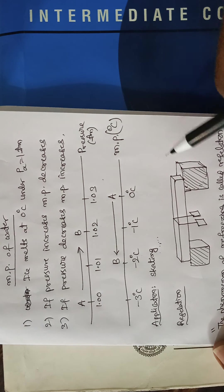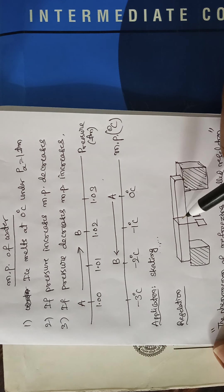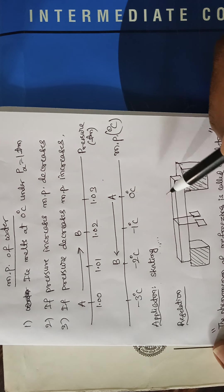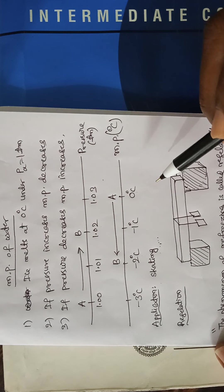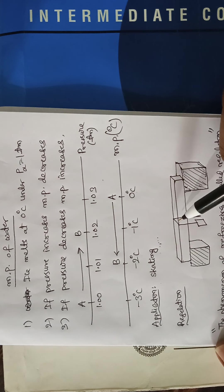Since the wire exerts pressure on the ice block, under the wire, there is an increase of pressure, so the melting point decreases and the ice is converted into water. This allows the wire to move downward through the ice block.